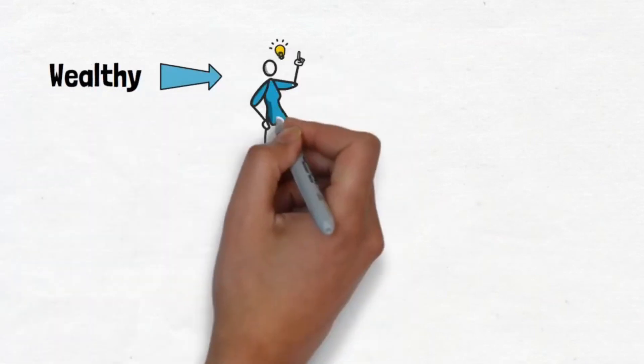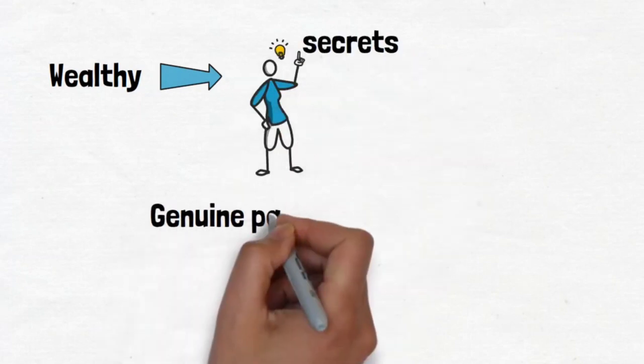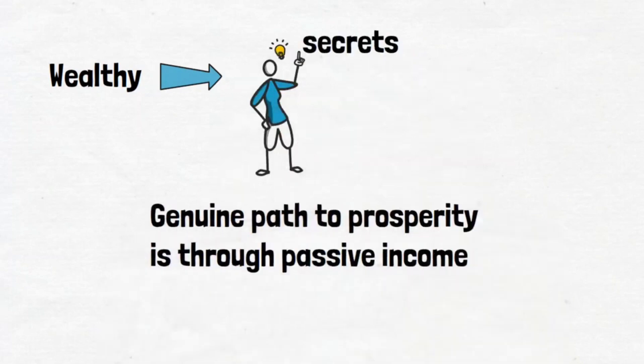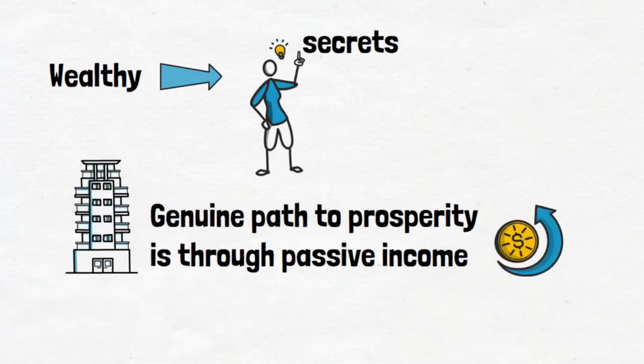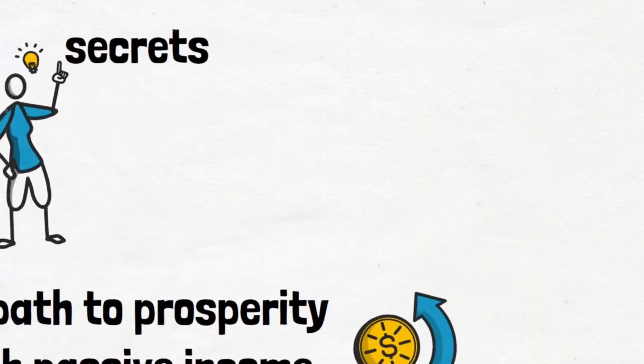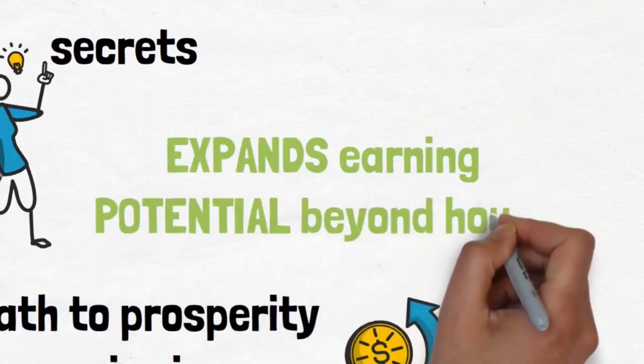The wealthy, on the other hand, are aware of capitalism's dirty secret. The genuine path to prosperity is through passive income. Whether it's stock trading, real estate investing, or backing someone else's company concept, anything that pays up unearned profit expands your earning potential beyond the hours in a day.